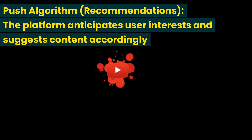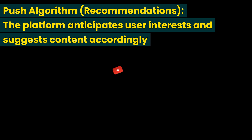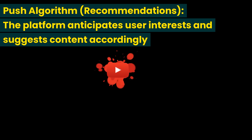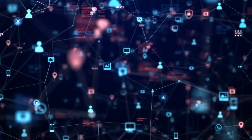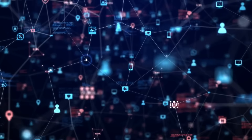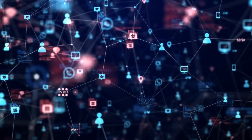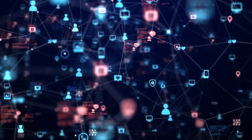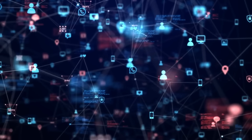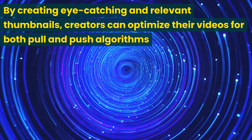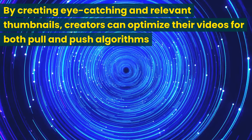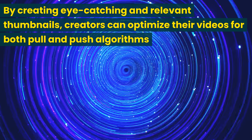Push algorithm — that is, recommendations. In the push algorithm, the platform anticipates user interests and suggests content, often in places like the homepage feed, up next suggestions, or the sidebar of related videos. Thumbnails play a critical role in this scenario by enticing users to click on recommended videos. They serve as visual triggers that prompt users to explore content they may not have actively searched for. A visually appealing thumbnail can significantly increase the likelihood of a video being clicked on. In both cases, thumbnails serve as powerful tools for content creators to attract viewers and drive engagement. By creating eye-catching and relevant thumbnails, creators can optimize their videos for both pull and push algorithms, ultimately increasing their visibility and reach on the platform.